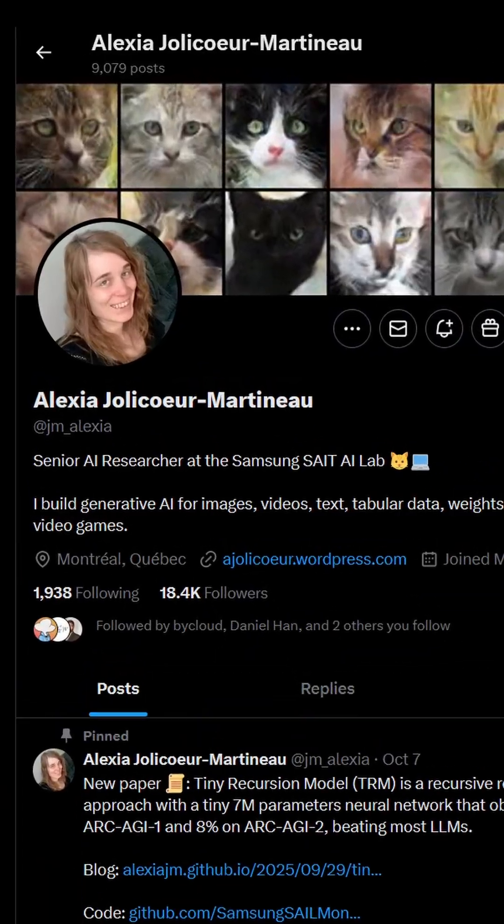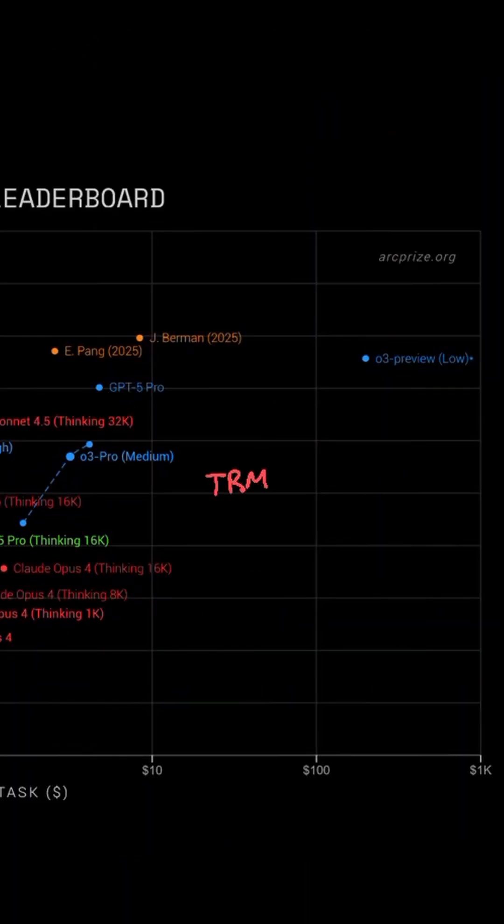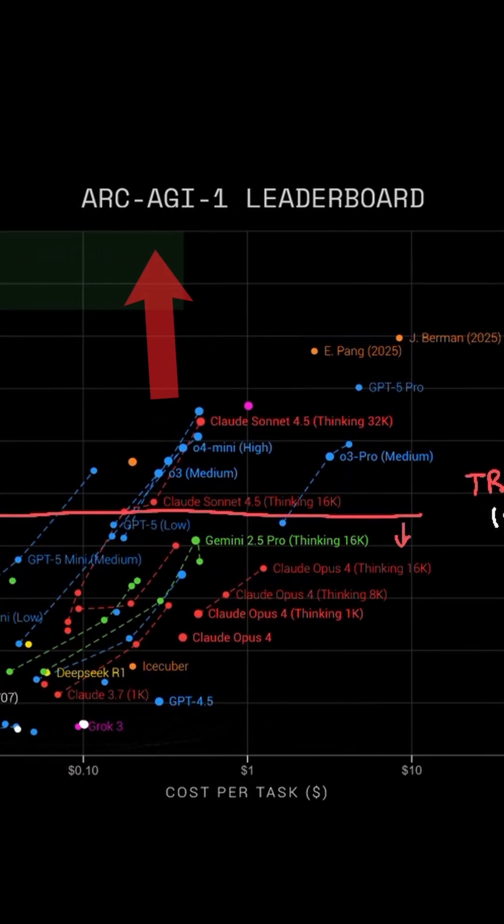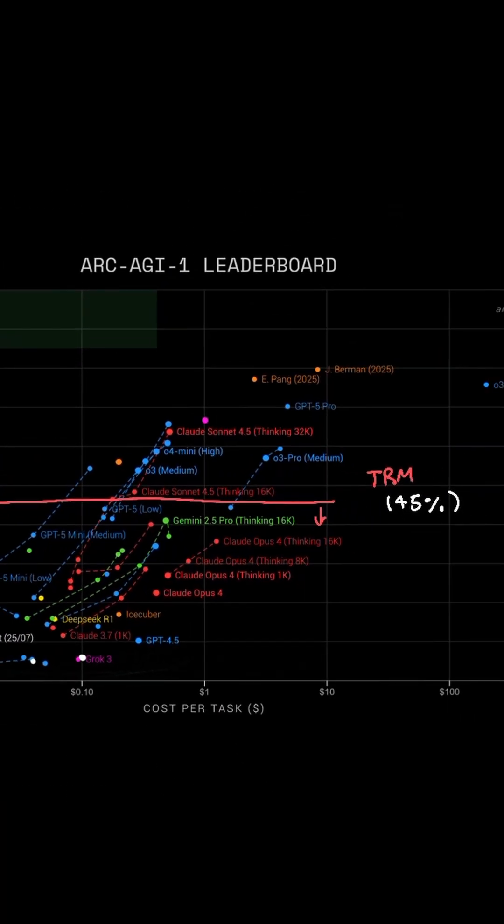And most large language models cost hundreds of millions of dollars to train. So when Alexia released TRM architecture that scored 45% on ARC-AGI benchmark, it was a pretty big deal, scoring close to Claude 4, Gemini 2.5, and O3.